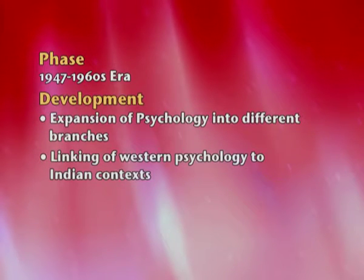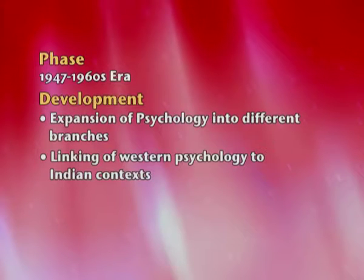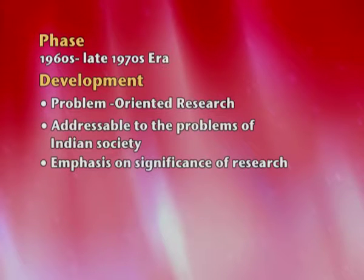Researcher Durganand Sinha identified four important stages of psychology's development in India. The first stage, 1930–1947, saw psychology being adapted from the Western model while seeking its own identity. From 1947 to 1960, it expanded into different branches and linked itself to the Indian context. From 1960 to 1970, it focused on solving Indian problems through applied and problem-oriented research.